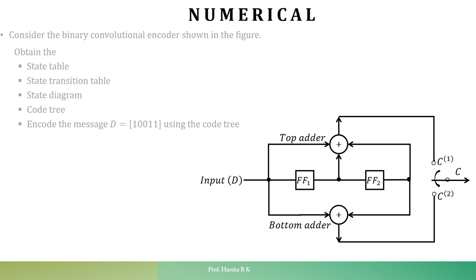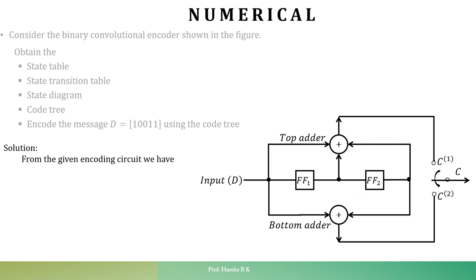Now let us figure out the N, K, M values for the given encoding circuit. We have two output bits, C1 and C2, at any unit time, so N equals 2. Looking at the input side, there is only one bit entering the encoding circuit at any unit time, so K equals 1. There are two stages in the shift register, so M equals 2. Therefore, the given convolutional encoder is a (2, 1, 2) convolutional encoder.